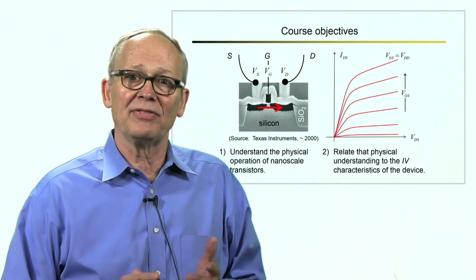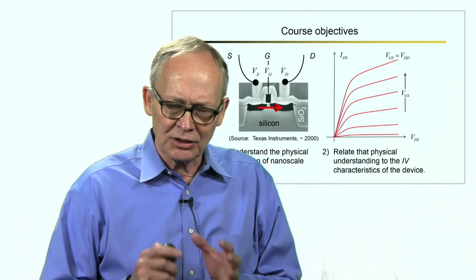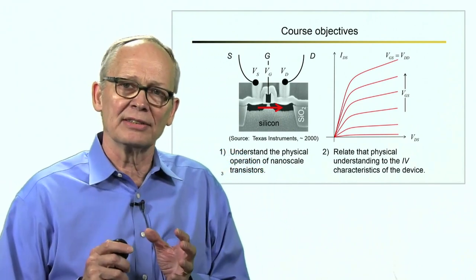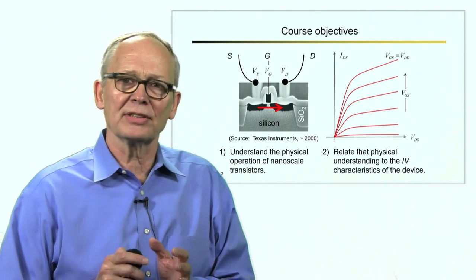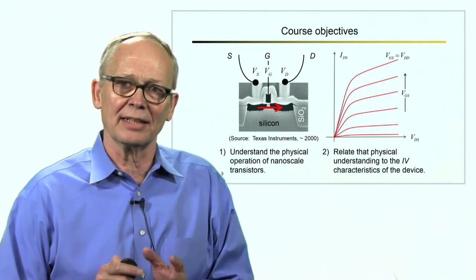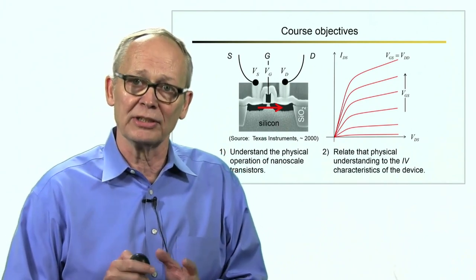We're talking already about 5 nanometer technology. So the dimensions of these transistors have shrunk to incredibly small sizes. This has forced us to rethink our understanding about how electrons flow in these very small structures.